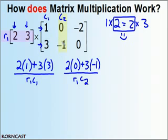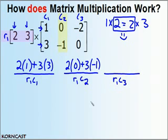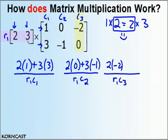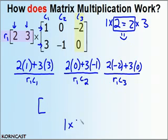Since we have three columns in this problem, we're going to get three columns. For row 1, column 3, I move my color strip over to column 3 and repeat the process: first element times first element — 2 times negative 2 — second element times second element — 3 times 0 — and add the products together. I end up with one row and three columns, giving a 1 by 3 matrix.